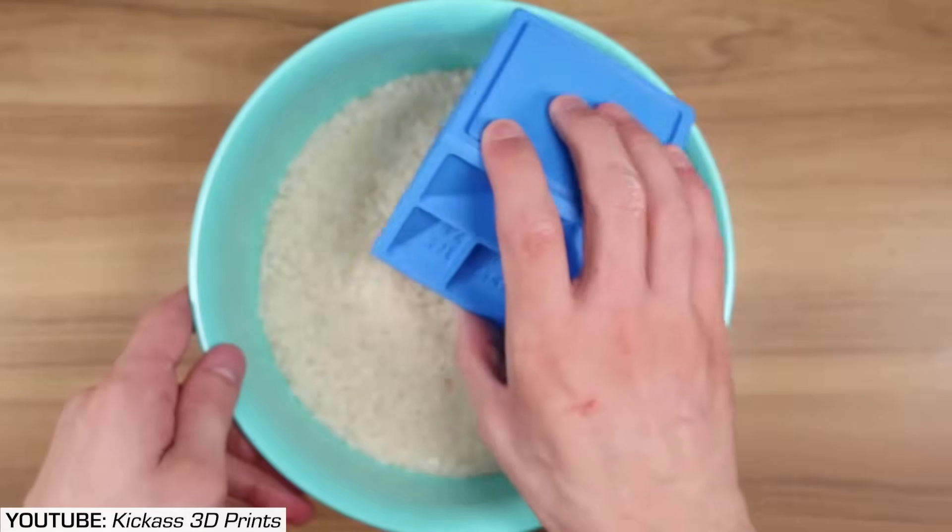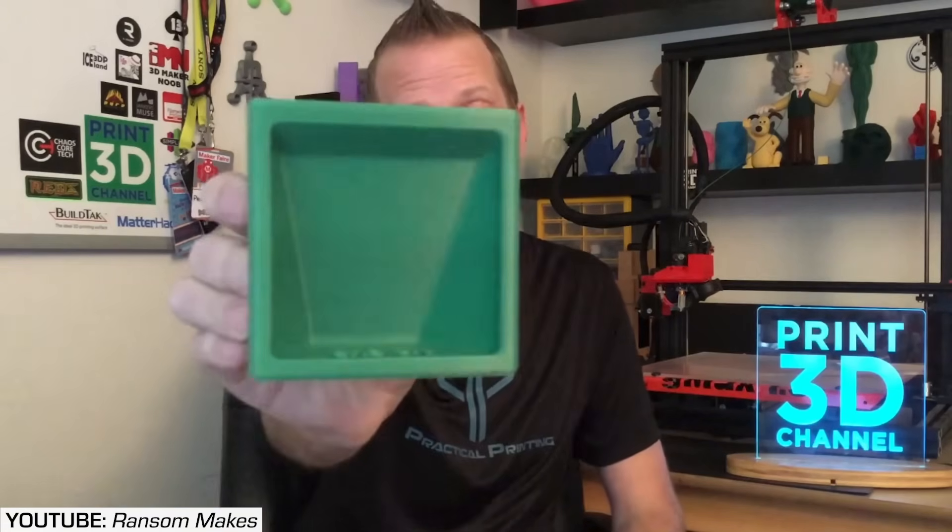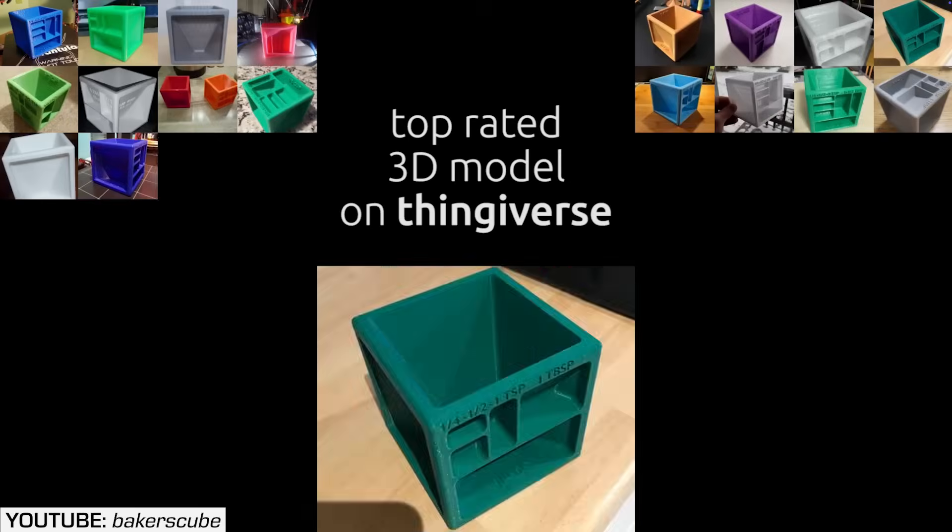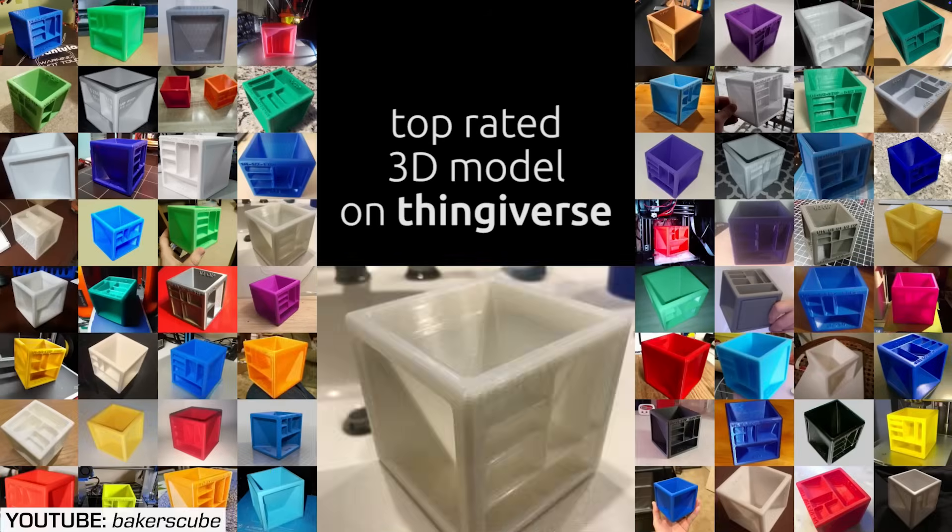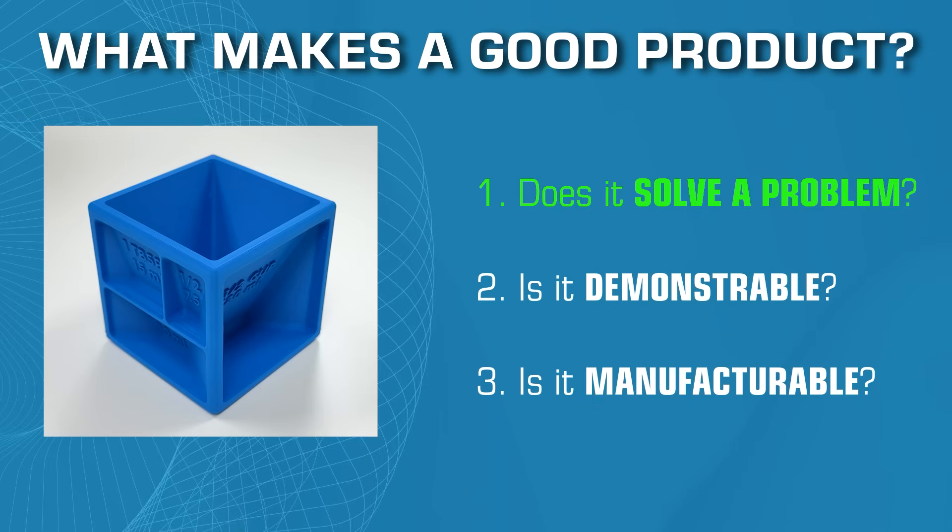But it is demonstrable, and this is why it was so popular. This thing clicks. People understand why it's nifty, cool, and interesting. You can show videos of it scooping up flour and leveling out, and it makes great photos in that context. So yes, it does solve the problem—not perfectly, but it solves a problem. And number two, it is really demonstrable and marketable. But why didn't this product take off even more? Now we come down to the manufacturing and design.